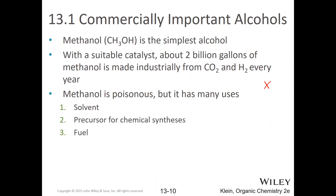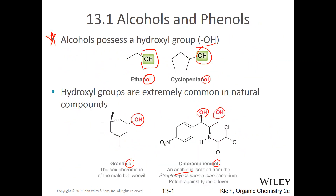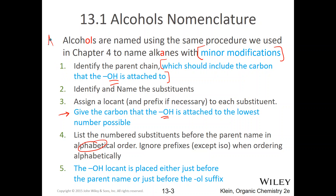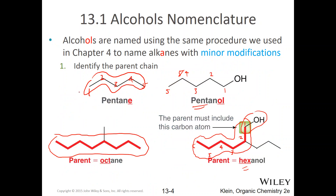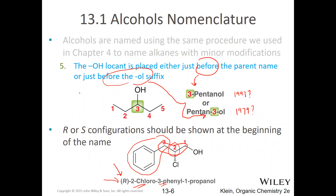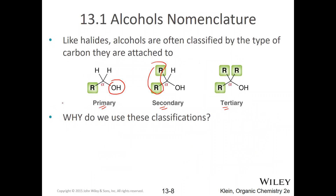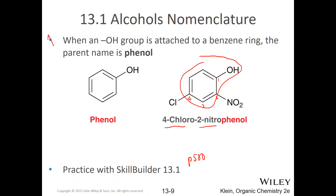That's it for section 13.1, but let me run back through and highlight what you really must know. Number one: alcohols possess a hydroxyl group — you must know that. Phenols possess a hydroxyl group — you must know that. Alcohols are named using the same procedure as before, including for cyclic alcohols. Like halides, alcohols are often classified as primary, secondary, or tertiary — you need to know this. When a hydroxyl group is attached to a benzene ring, the parent name is phenol — you need to know that.